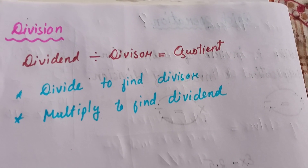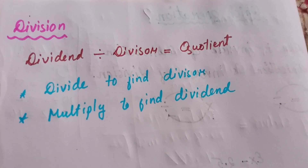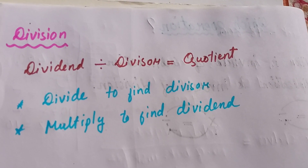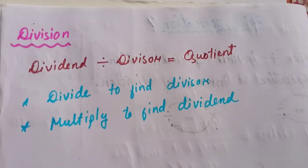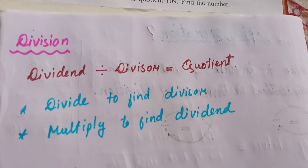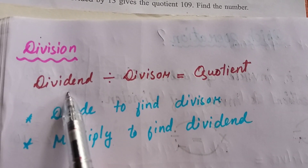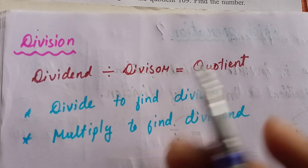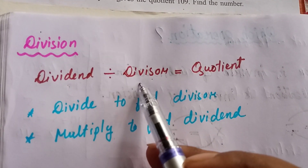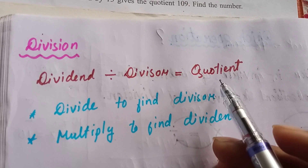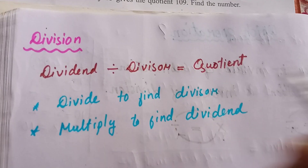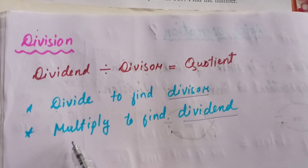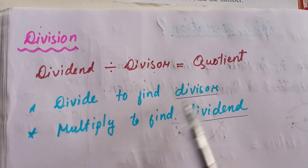In the case of division the rule is a little different. The opposite of division is multiplication, but sometimes we have to multiply and sometimes divide. The number being divided is called the dividend, the number we divide by is the divisor, and the answer is the quotient. To find the divisor we need to divide; to find the dividend we need to multiply.